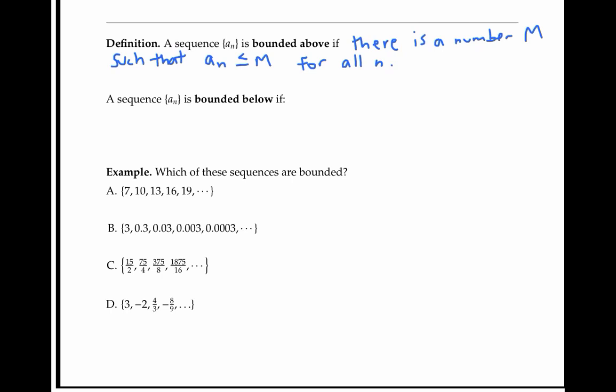A sequence is bounded below if all the terms are greater than some number. In other words, there's a number lowercase m such that a sub n is greater than or equal to lowercase m for all n.